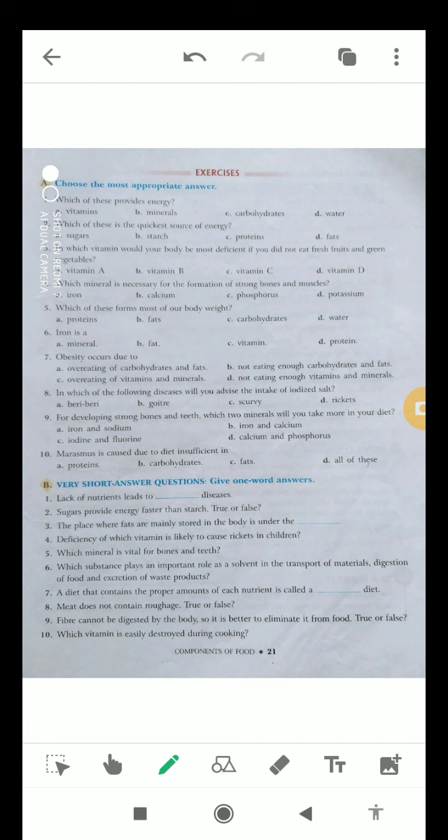Question number four, deficiency of which vitamin is likely to cause rickets in children? That is vitamin D, so answer will be vitamin D. Question number five, which mineral is vital for bones and teeth? The answer will be calcium.